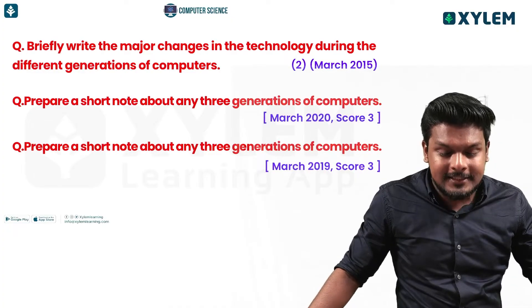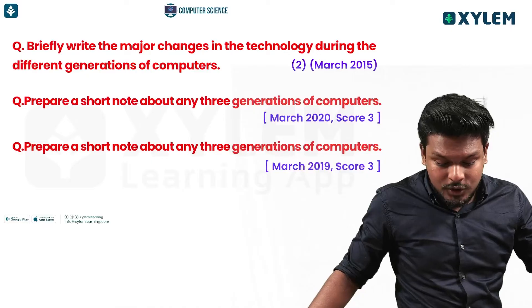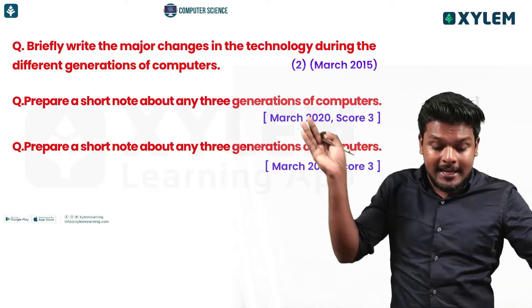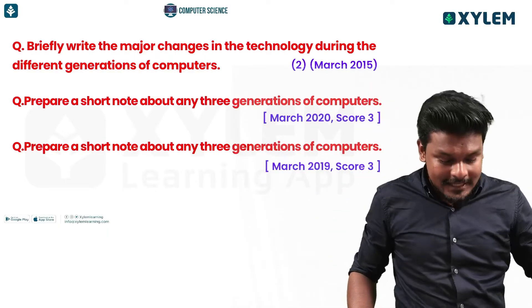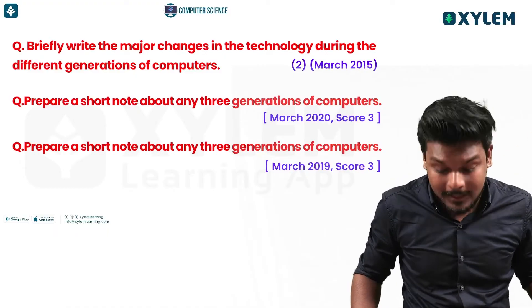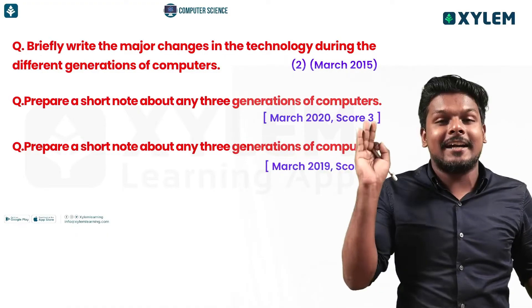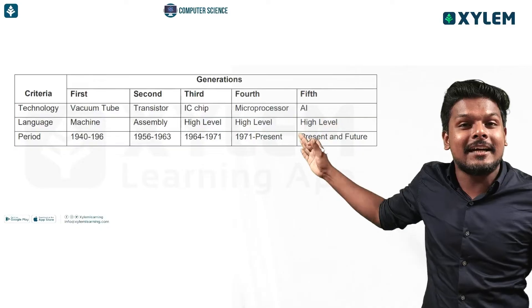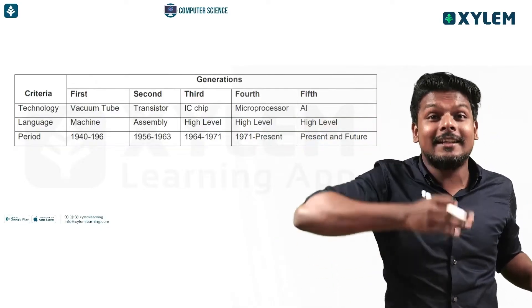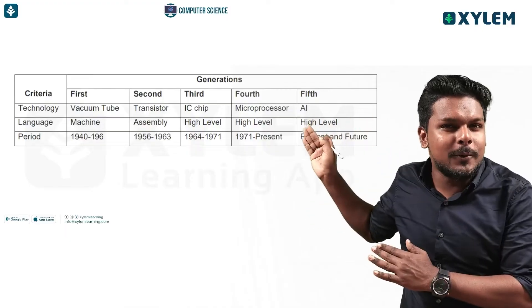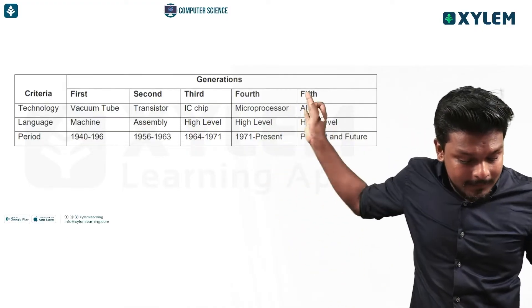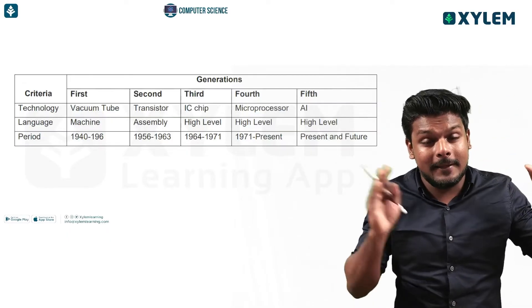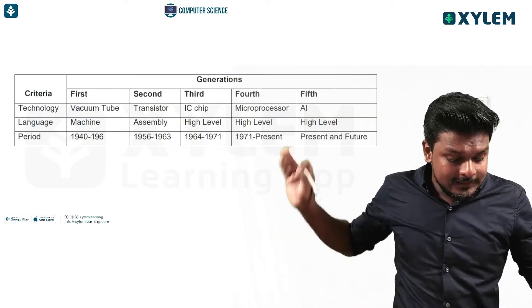Briefly write the major changes in technology during the different generations of computers. Prepare a short note about any generation of computers — that's 3 marks. The important topics are the 5 generations: technology, language, and the time period.